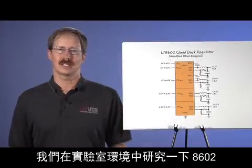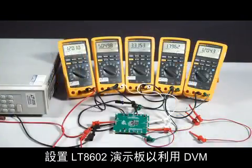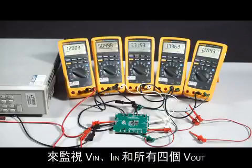Let's look at the 8602 in a lab setting. The LT8602 demo board is set up with DVMs monitoring V-in, I-in, and all four V-outs.